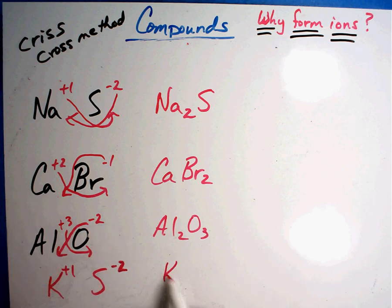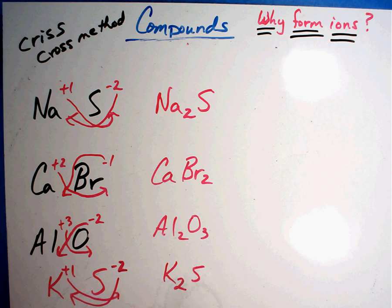So it should be K two - the two went there - S one. And you don't write the one, called potassium sulfide.